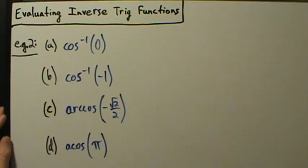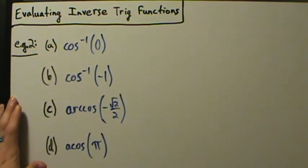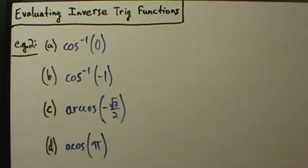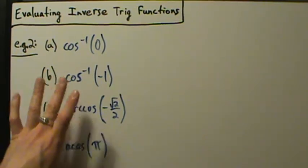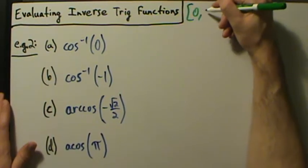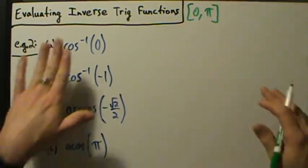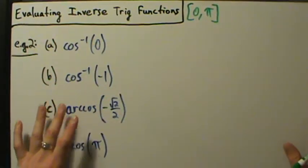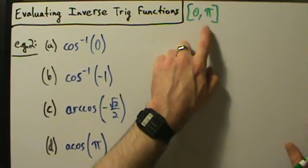Here's another example with evaluating inverse trig functions — the inverse cosine function. We're going to do it the same way we did inverse sine, but with different numbers and different intervals. Before we move on, remember: the range of the inverse cosine function is the interval from 0 to pi, including the endpoints. So whatever value we get when we evaluate it must be in this interval.